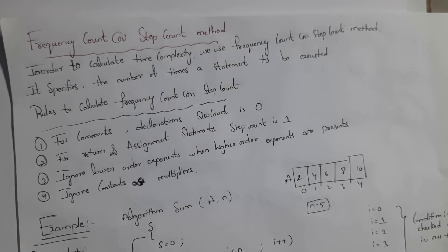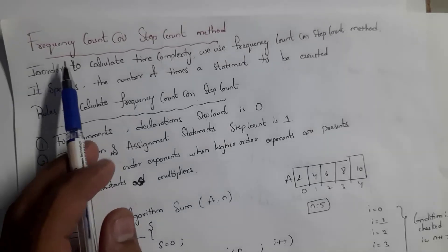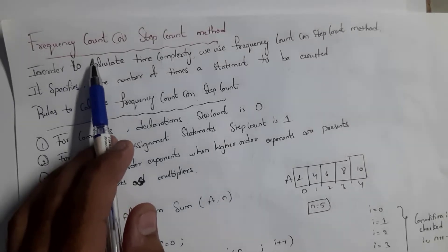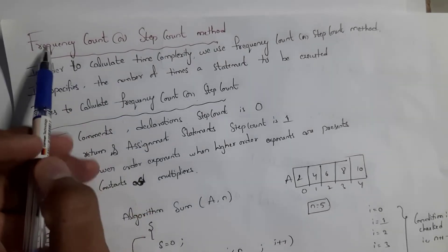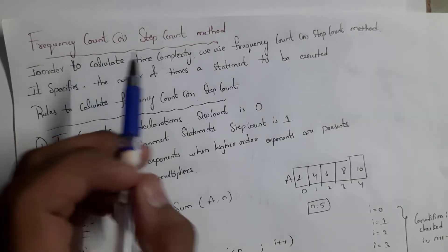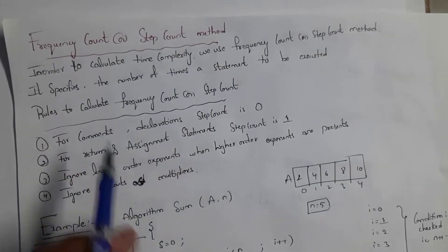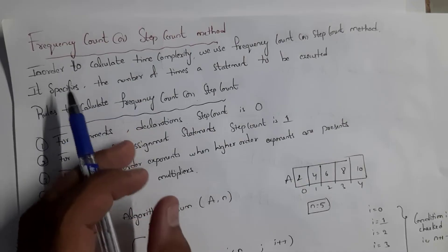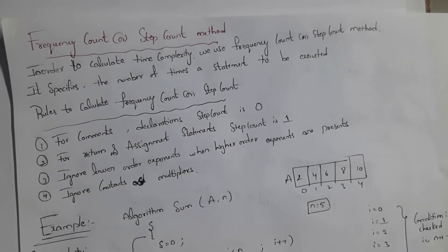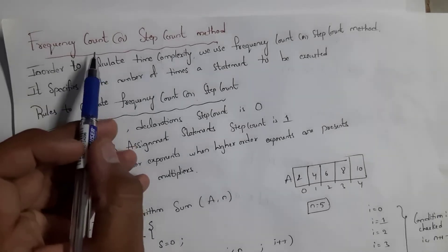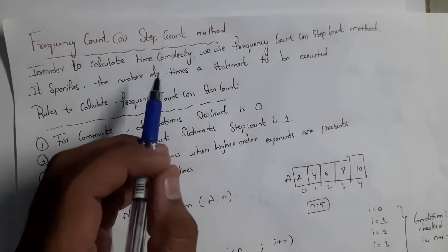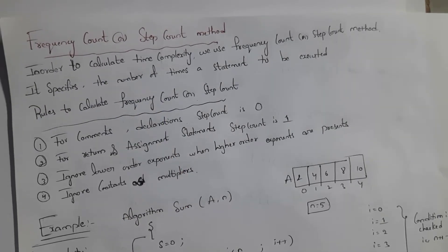Hi guys, welcome to my channel. In this video, I will be covering the frequency count method in the DA subject. We also call this the step count method. The use of this frequency count method is to calculate the time complexity of an algorithm. This frequency count method specifies the number of times a statement is to be executed.